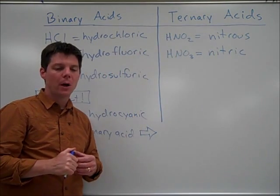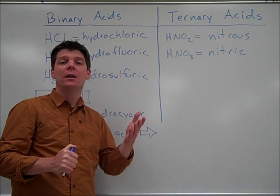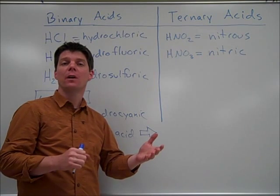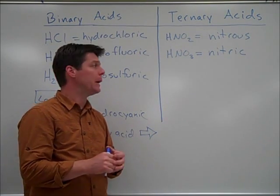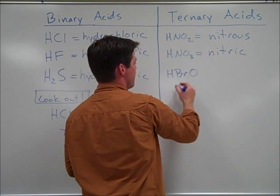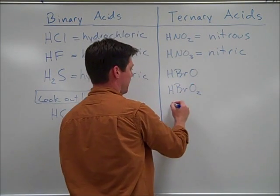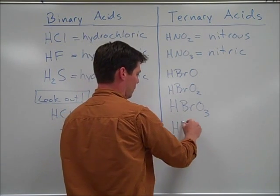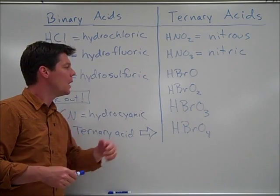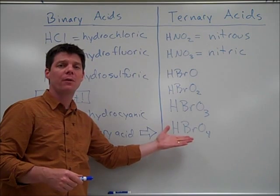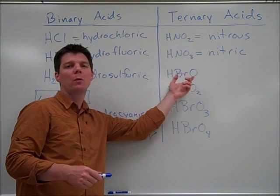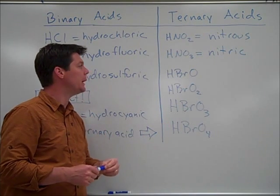One final note. Let's take a look at some examples of acids that are built using different oxoanions of bromine. So we have examples of four different acids here. All are built using hydrogen ions which are paired with different oxoanions of bromine.